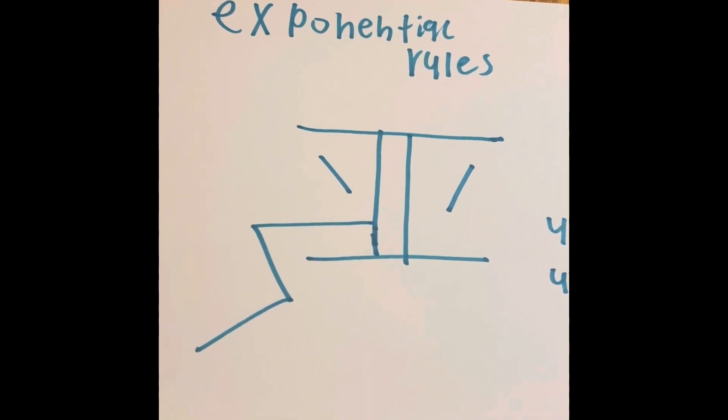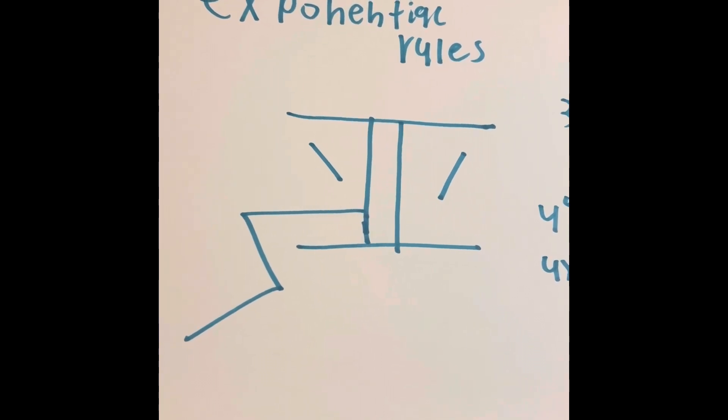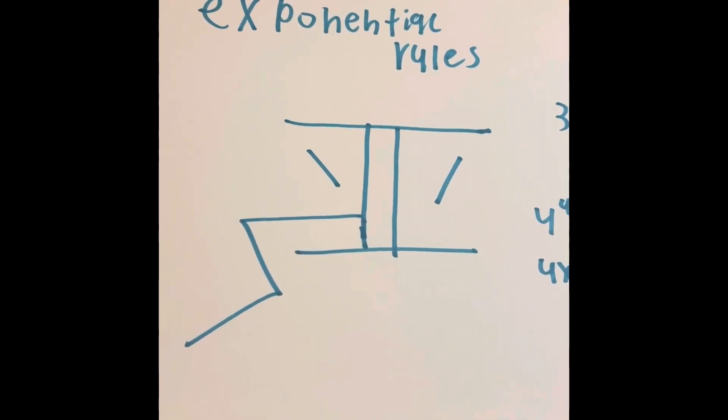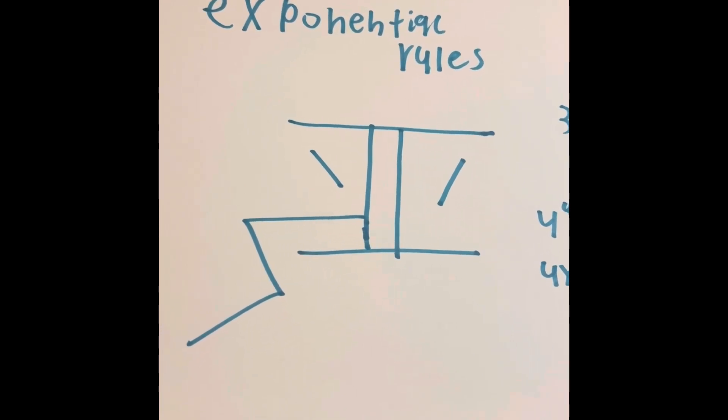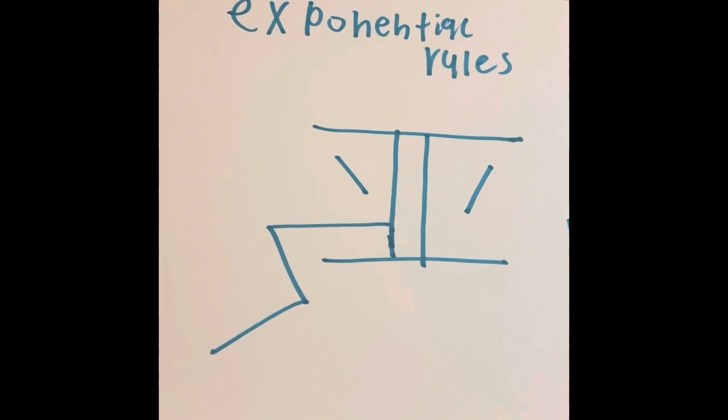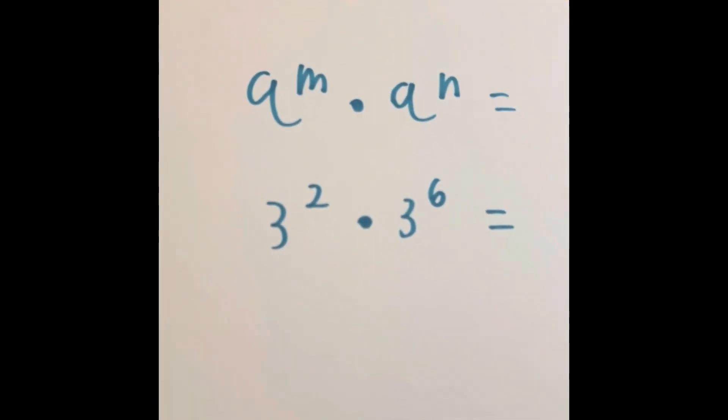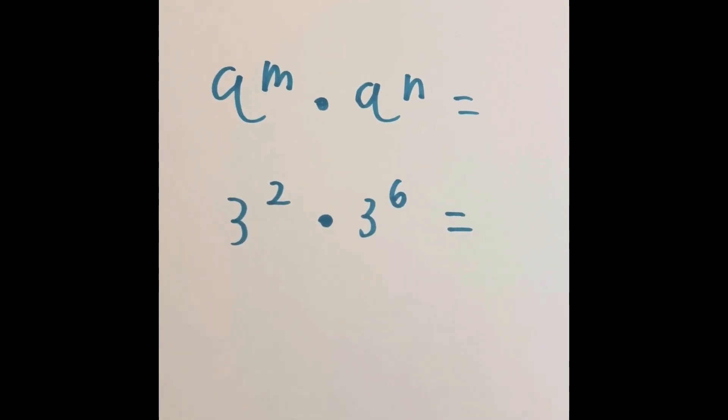But what happens when we try to play around with the exponents? Like, we add, subtract, multiply, divide, and etc. Well, what we're going to do is we're going to try to understand and learn, if you were to do all that with exponents, what would happen? So here's the first one. The top equation is kind of like a little formula to help you understand how it all works. The bottom equation is going to be an example.